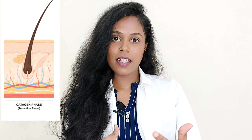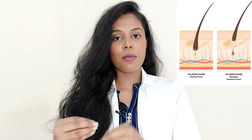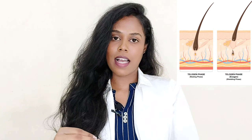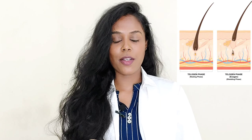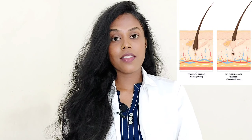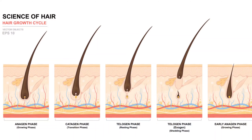In the catagen phase, hair detaches from the scalp. And finally, we enter the telogen phase, where the hair is released from the scalp. After that, we return to the anagen phase again. It is a cyclical process.